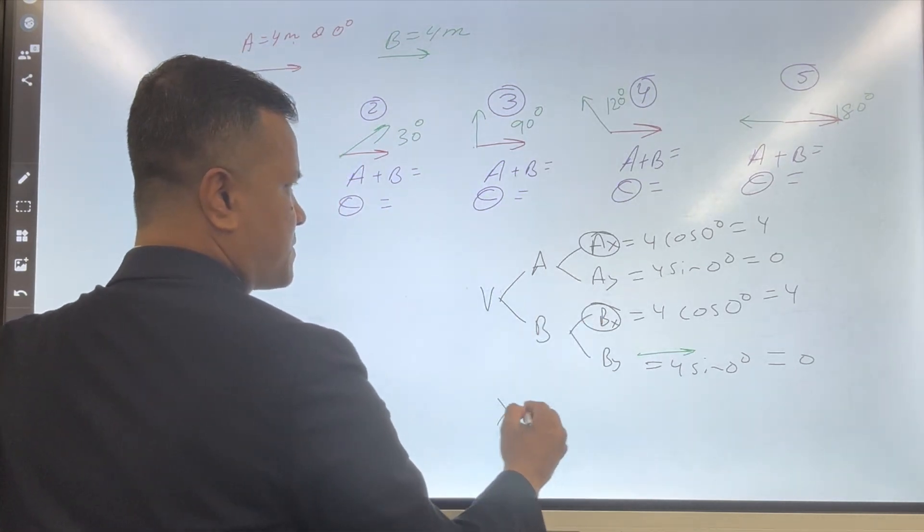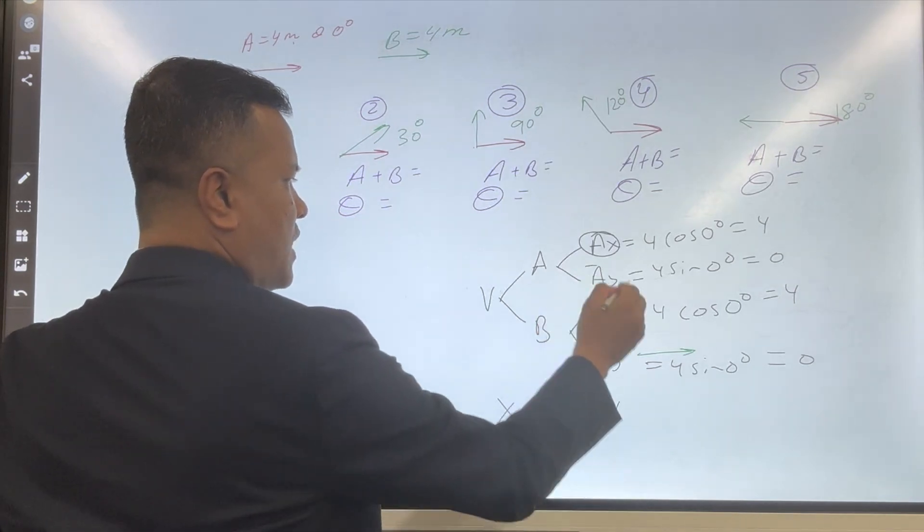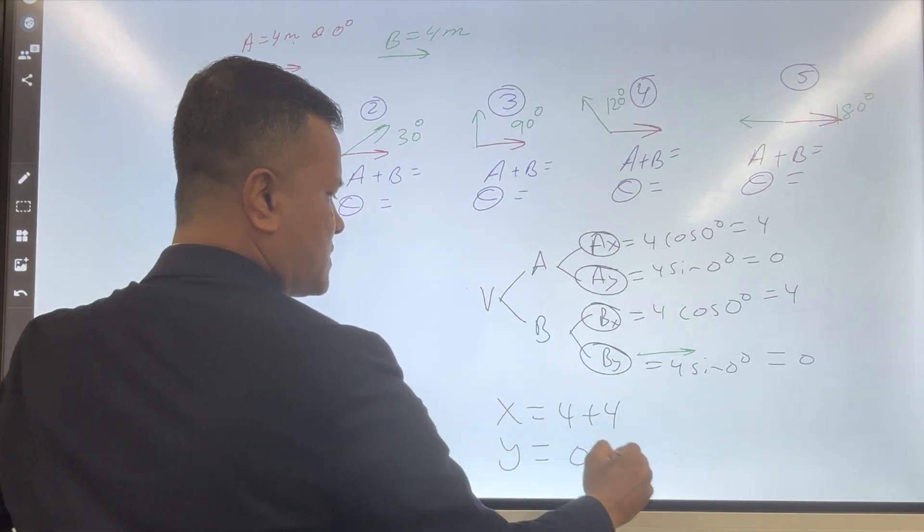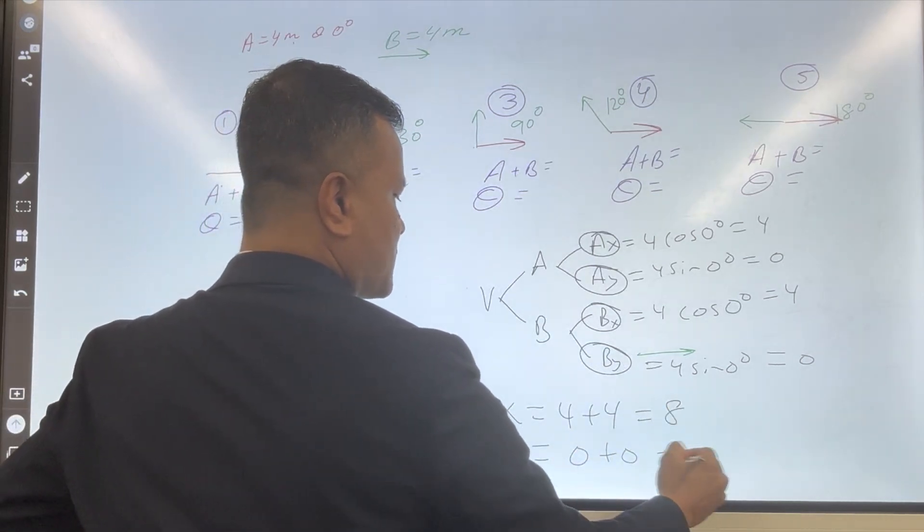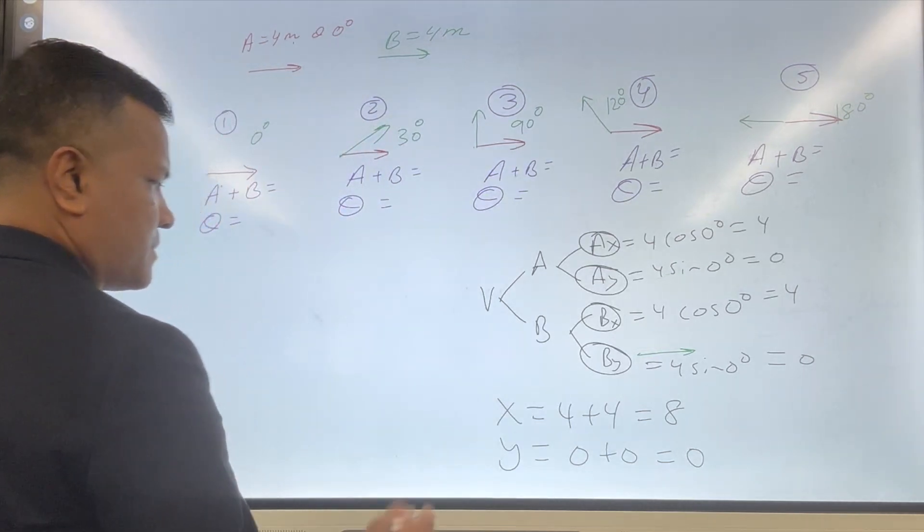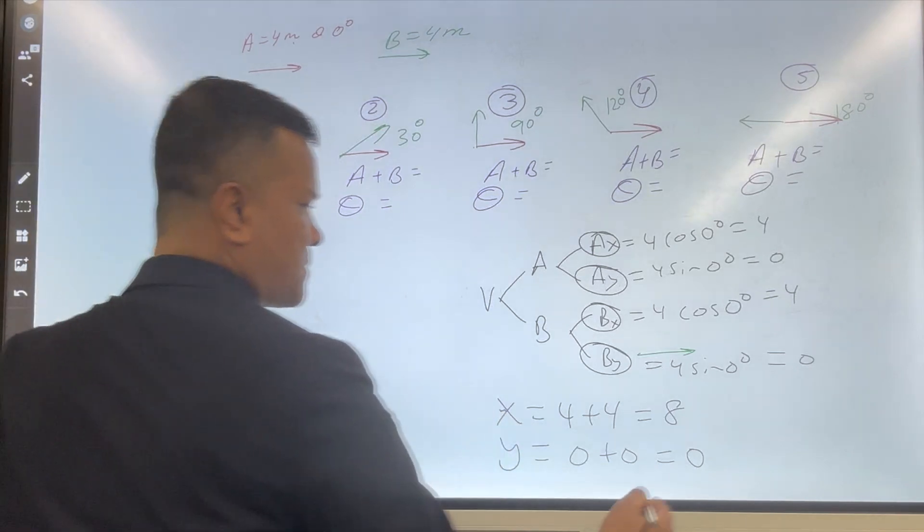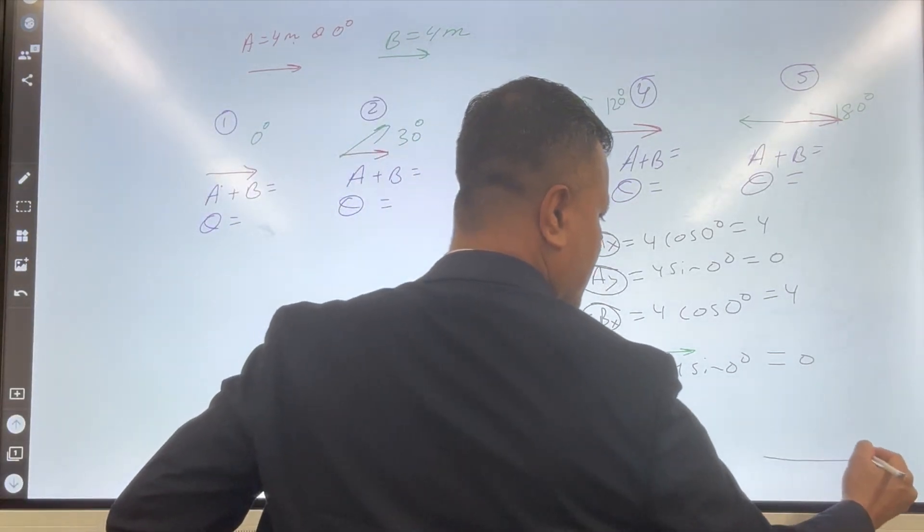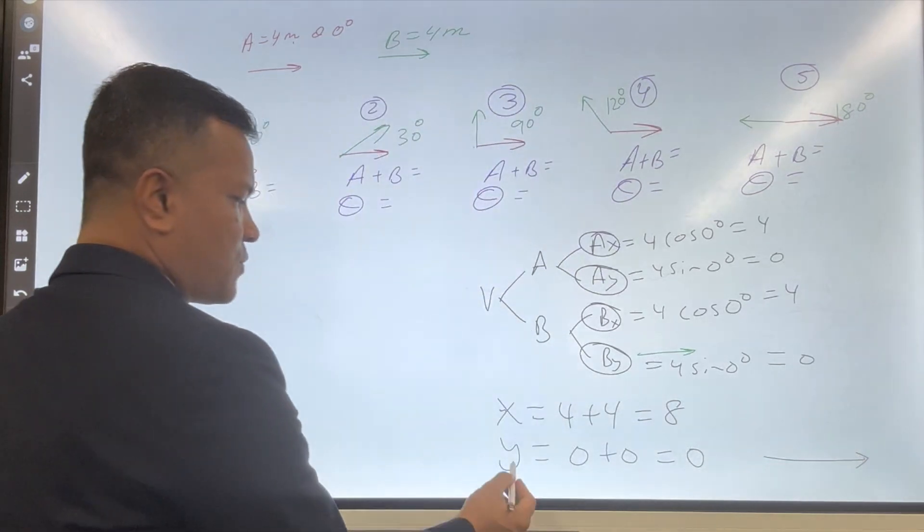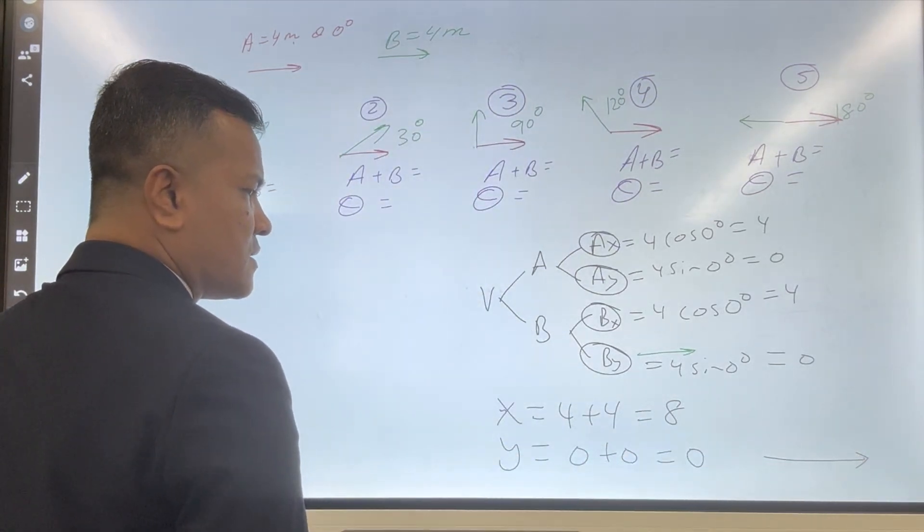So x would be 4 plus 4, and now we're going to do the y. Y will be 0 plus 0, so x would be 8, y would be 0. Okay, now we have the x vector. What is the angle of the x vector? 0 degree.